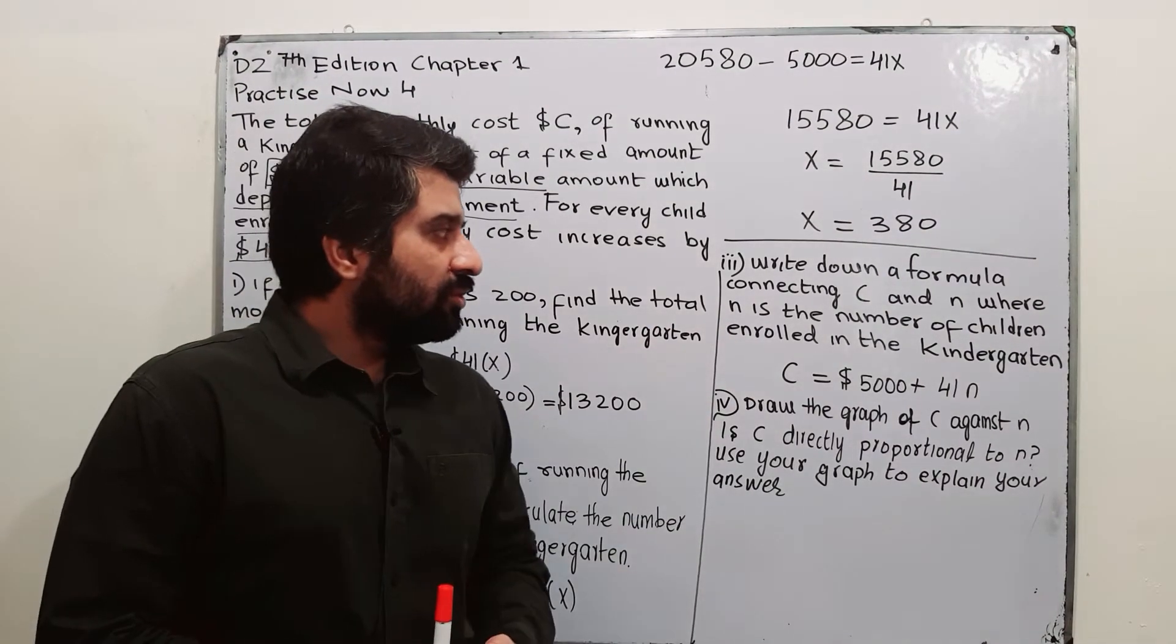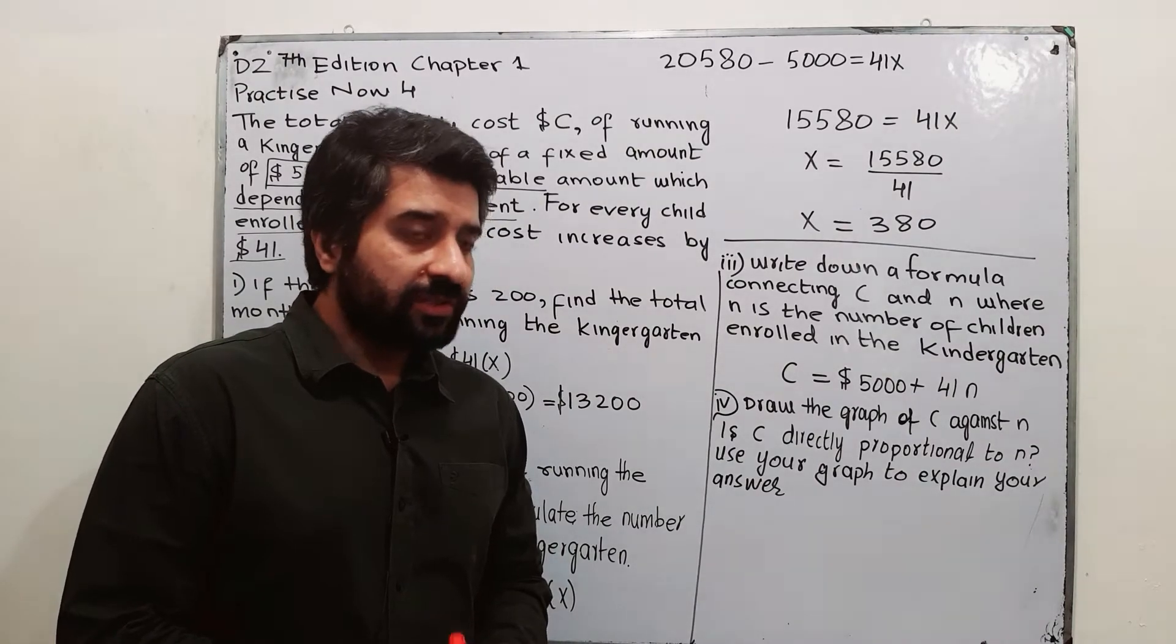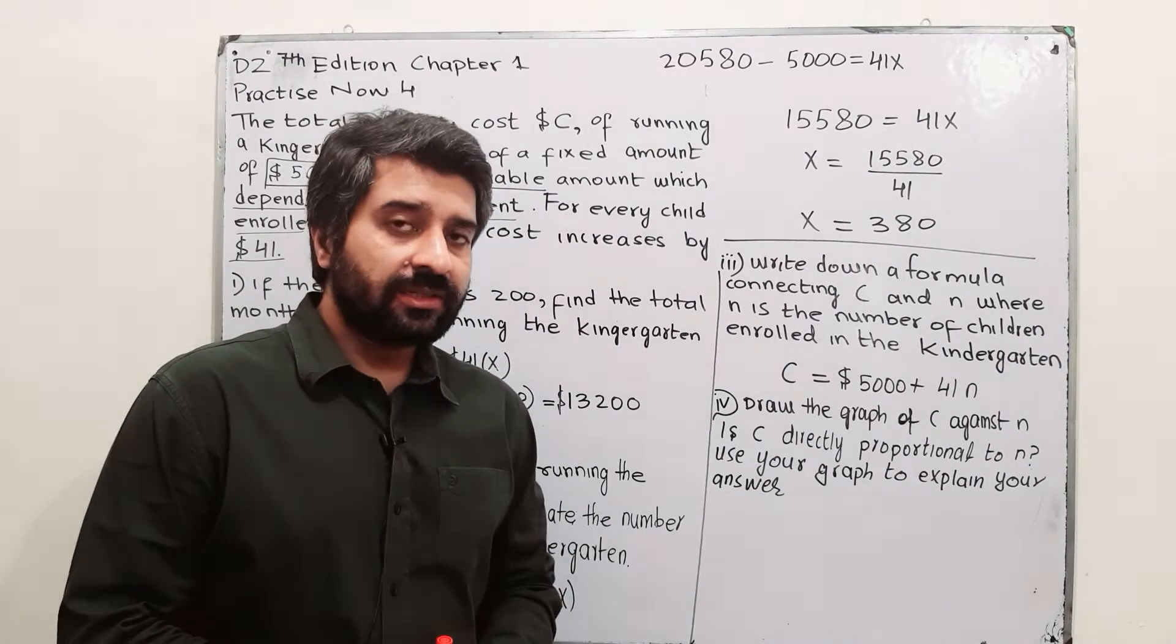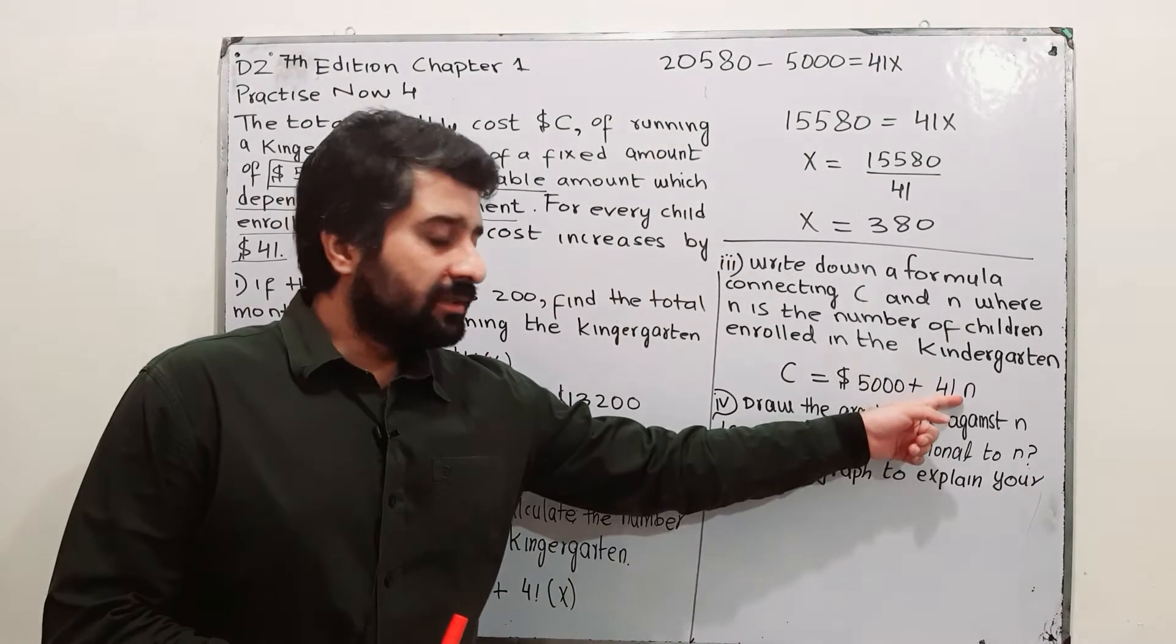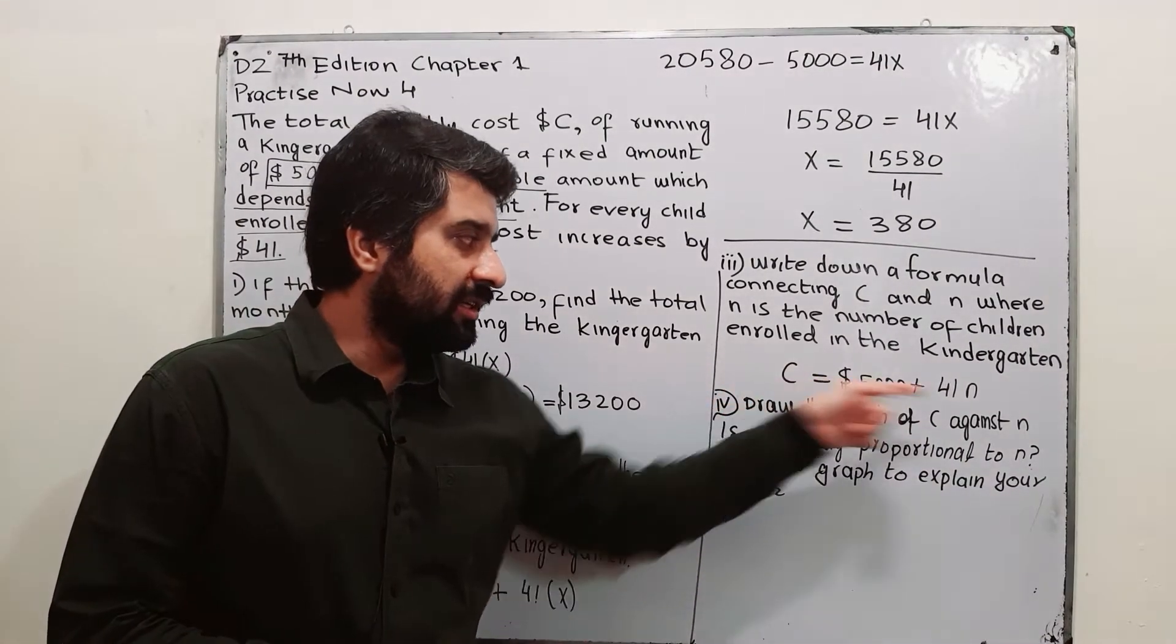Third one is write down a formula connecting C and N where N is the number of children enrolled in the kindergarten. So, this is N, number of children enrolled in kindergarten. This is a formula connecting C and N.